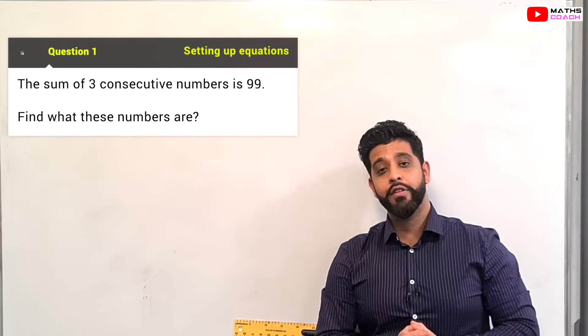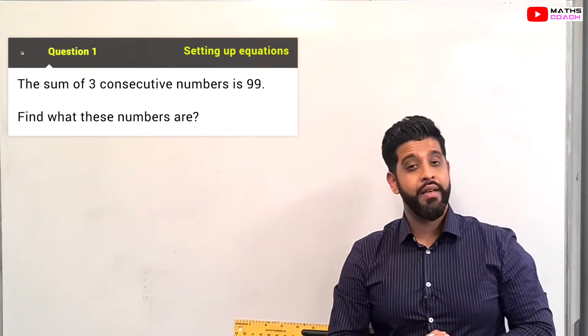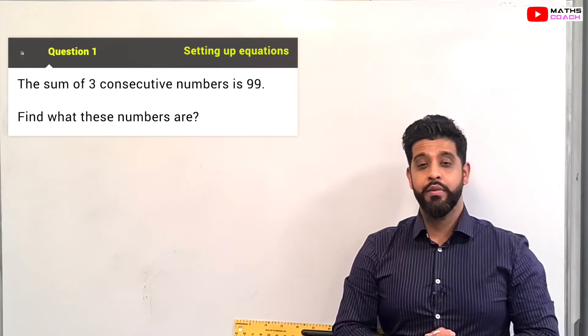So let's have a look at our first question. The sum of three consecutive numbers is 99. Find what these numbers are.